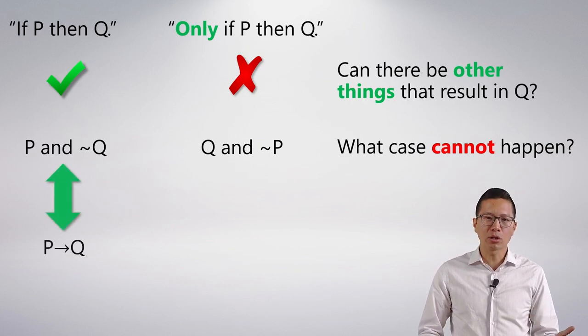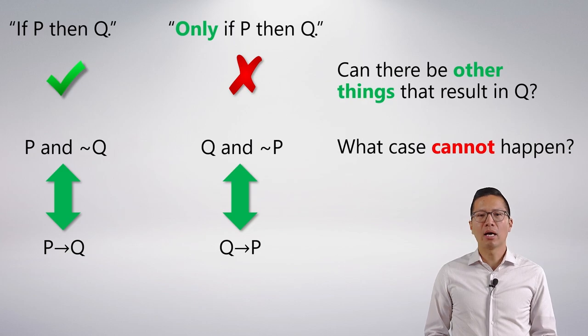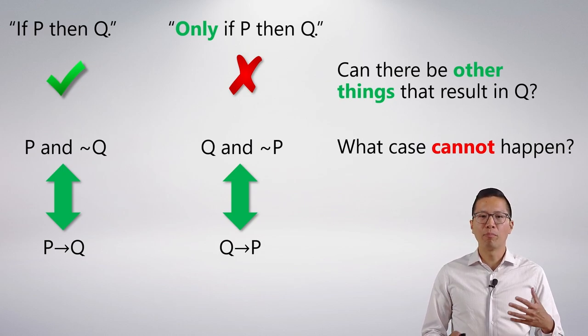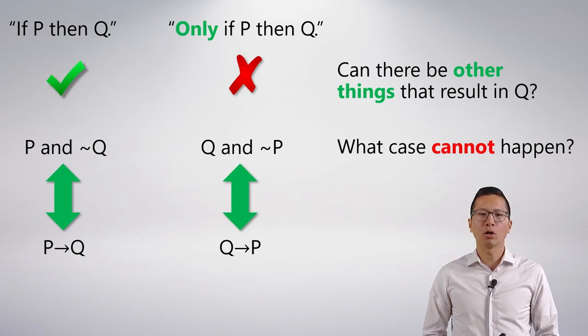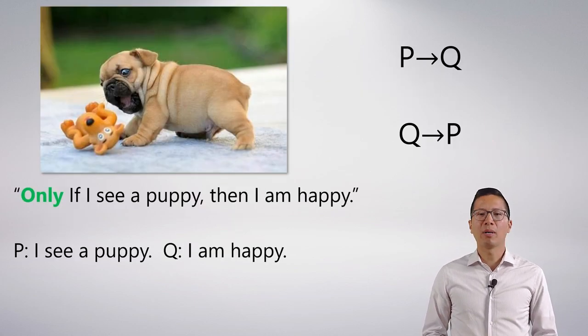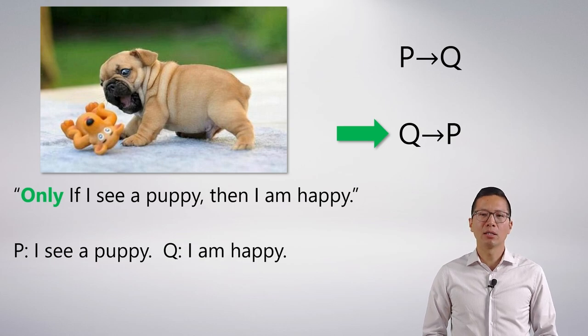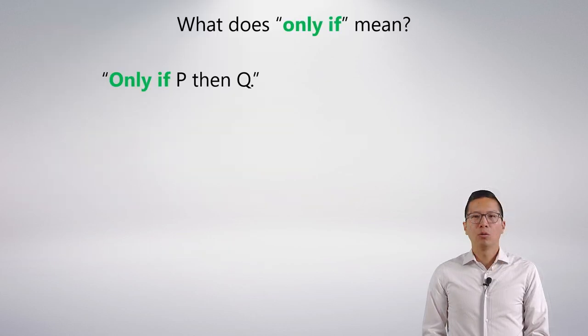Now you can sort of see where this is going. We already know that if P then Q symbolizes as P arrow Q. And now what we can see is that only if Q then P naturally symbolizes as Q arrow P. Because if I want to forbid the case that Q and not P together can occur, then that's just the conditional Q arrow P. We can look back at our first question, only if I see a puppy then I am happy. And now we know. This isn't P arrow Q because that was the case of just if I see a puppy then I am happy. This is actually Q arrow P.